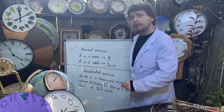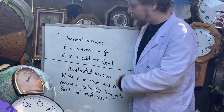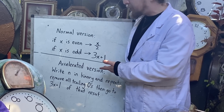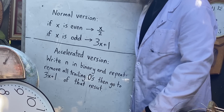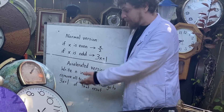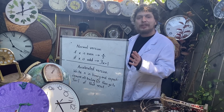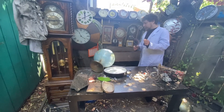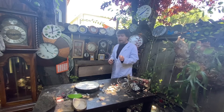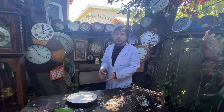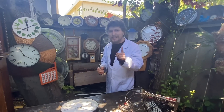Although normally this is described as a two-step process where you check at each stage whether a number is even or odd before applying an operation, in an accelerated version — which gives the same end result — you can just write the number in binary, remove any trailing 0s, then repeat the process of going to 3x plus 1 for the result and removing trailing 0s again. More than one quintillion numbers have been checked and shown to fall into that 4, 2, 1 cycle eventually.